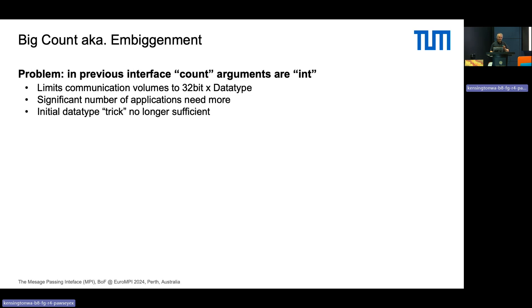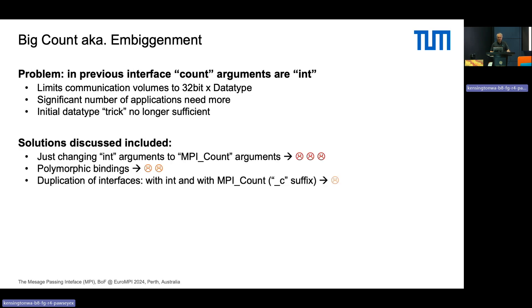How can you go beyond a 32-bit count? There were some tricks that kind of worked but were cumbersome. We wanted to do the fix once and for all. The simple idea of just changing the data type would invalidate backwards capability — we didn't want that. Polymorphic bindings only worked so-so: Fortran worked nicely but in C we couldn't do that. The only solution was to duplicate the entire interface. Since then you will see both a 32-bit integer and a 64-bit integer version of any operation that has a count, identified by an underscore C suffix.